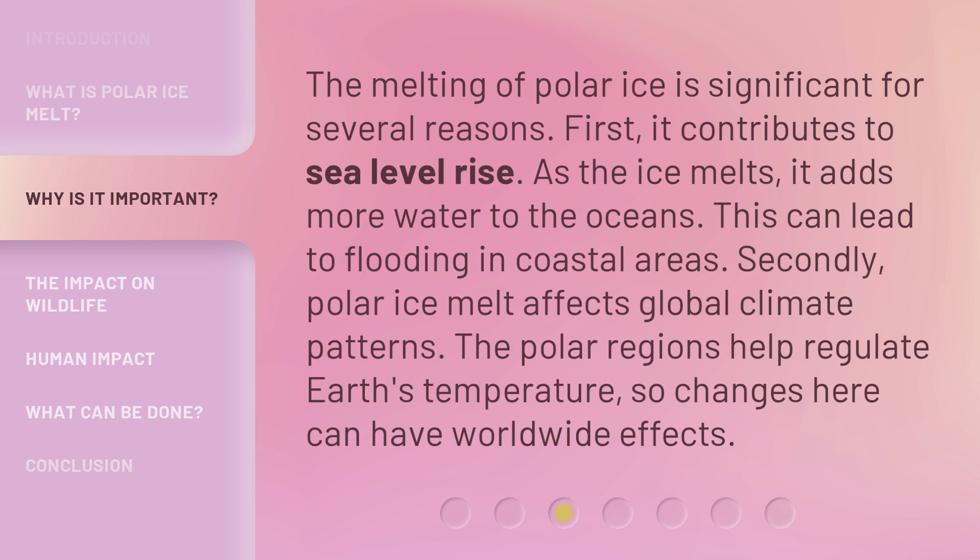The melting of polar ice is significant for several reasons. First, it contributes to sea level rise. As the ice melts, it adds more water to the oceans, which can lead to flooding in coastal areas. Secondly, polar ice melt affects global climate patterns. The polar regions help regulate Earth's temperature, so changes here can have worldwide effects.